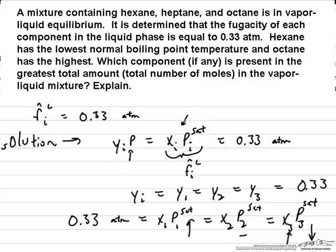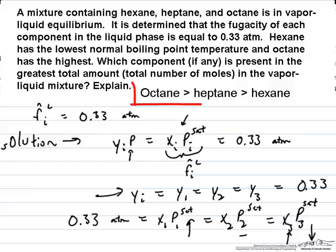We had the same amount of each component in the vapor phase, but we have more octane in the liquid phase, and therefore for our entire system, we have more octane, and the minority component in this case is hexane.